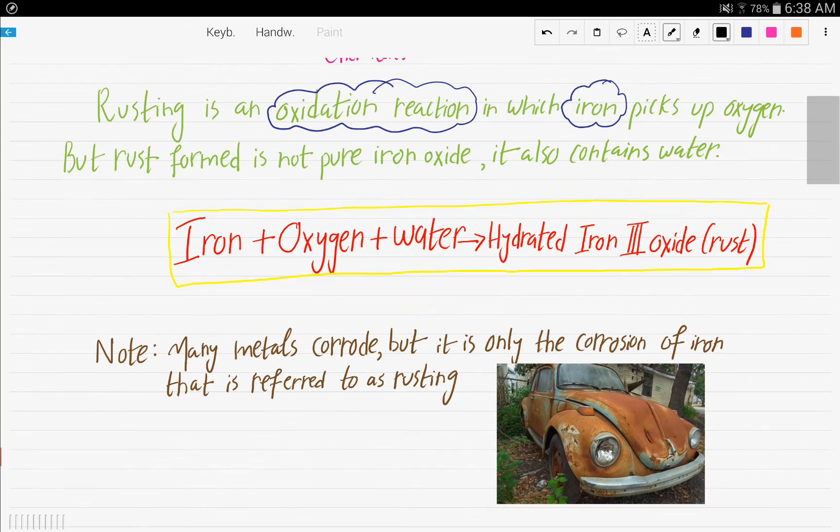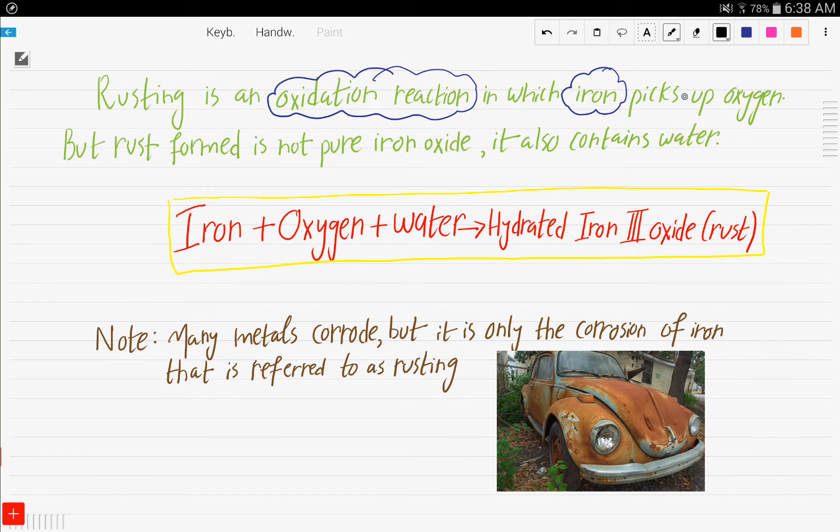Rusting is an oxidation reaction in which iron picks up oxygen. But the rust formed is not pure iron oxide, it also contains water. So water is needed, water is a must. Iron plus oxygen plus water gives you hydrated iron III oxide, which is also known as rust. You need to memorize this equation. With oxygen and water, the iron forms a compound known as hydrated iron III oxide, which is referred to as rust.